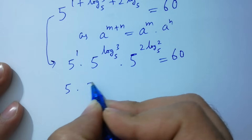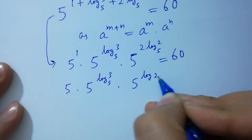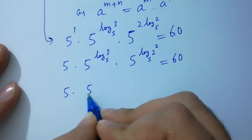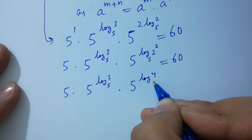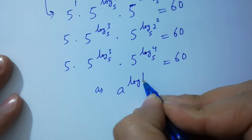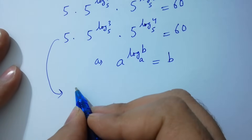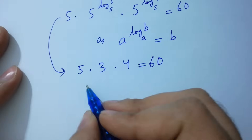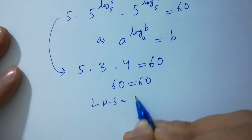So we have 5 times 5 to the power log base 5 of 3, times 5 to the power log base 5 of 2 to the scale of 4, equals 60. Using the rule a to the power log base a of b equals b, this gives 5 times 3 times 4 equals 60. That is 5 times 3 is 15, 15 times 4 is 60, equals 60. Left hand side equals right hand side.